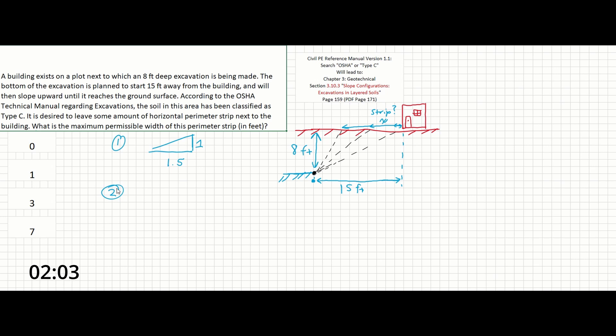So we know that 1.5 over 1, which is going to be x over y, equals x, which we don't know yet, over 8 feet. So solving for this, x equals 12 feet.